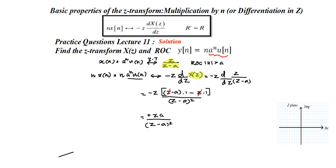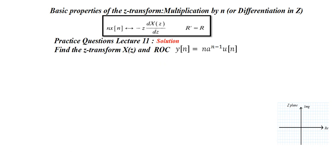The ROC does not change with the differentiation property, so it remains |z| > |a|. We have the result for this question. Now we will discuss the next question.